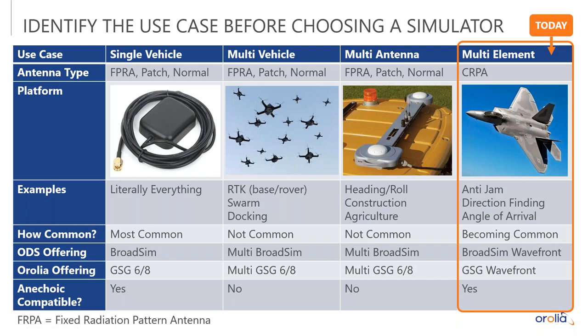When we talk about simulation and GNSS simulators we need to make sure we choose the correct simulator for the platform that's under test. Most use cases start with the single vehicle use case. There are billions of devices on the planet that are single antenna GPS receivers. This is the most common use case by far and is a good fit for our BroadSim or GSG 6 or 8 simulator offering. These are simple patch antennas or normal antennas and this is a starting point for how you think about the types of simulation we're going to talk about.